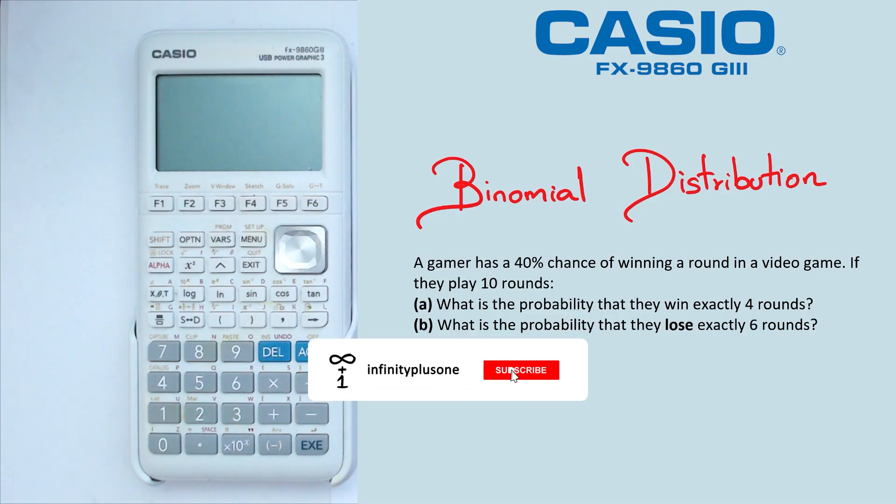All right, so having a look at this question first, what we need to do is actually get all the important information from this question before we start inputting this in the calculator. So the first thing we're going to be looking at is there's a 40% chance of winning, so we're going to put the probability as 0.4.